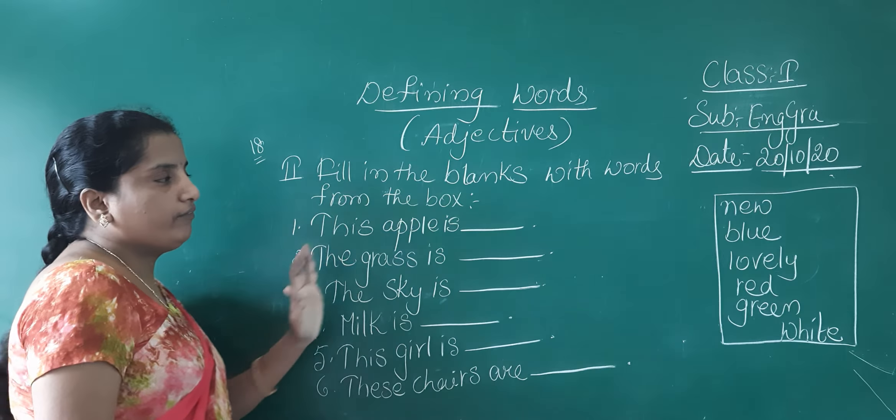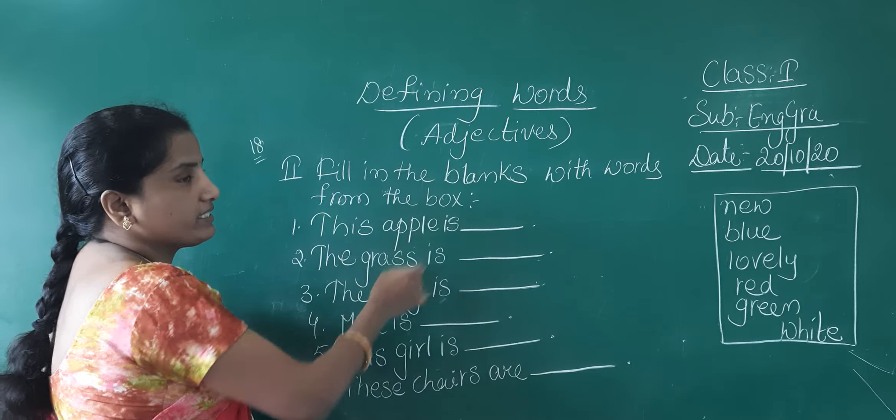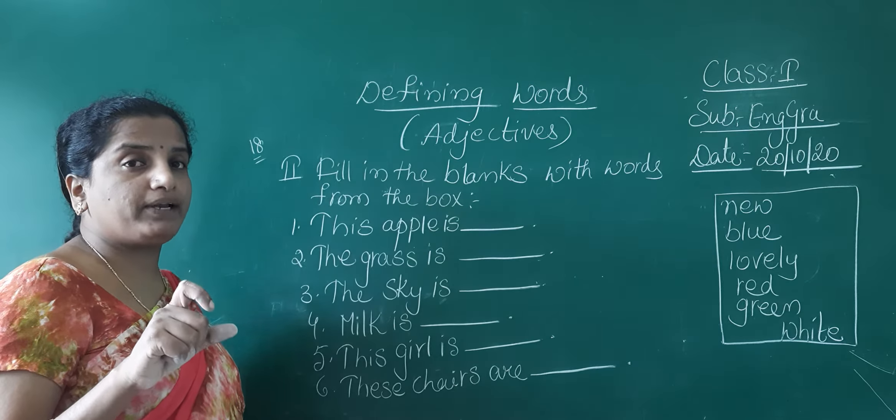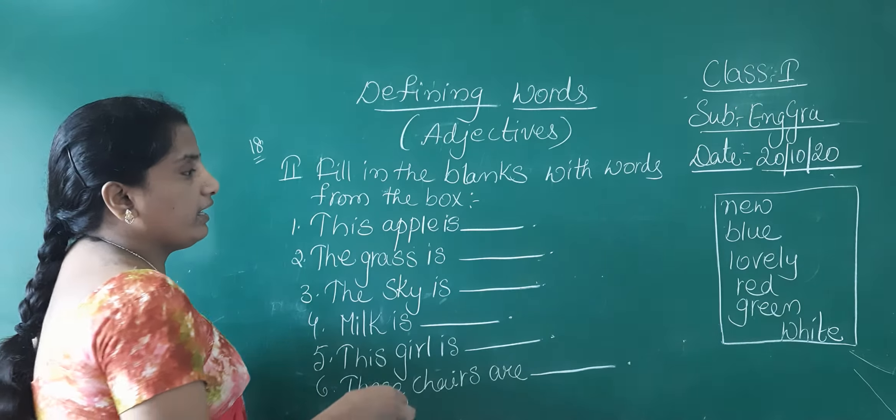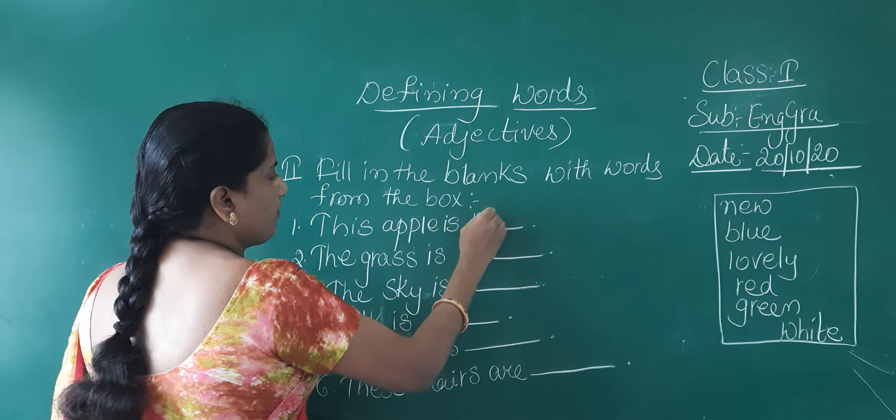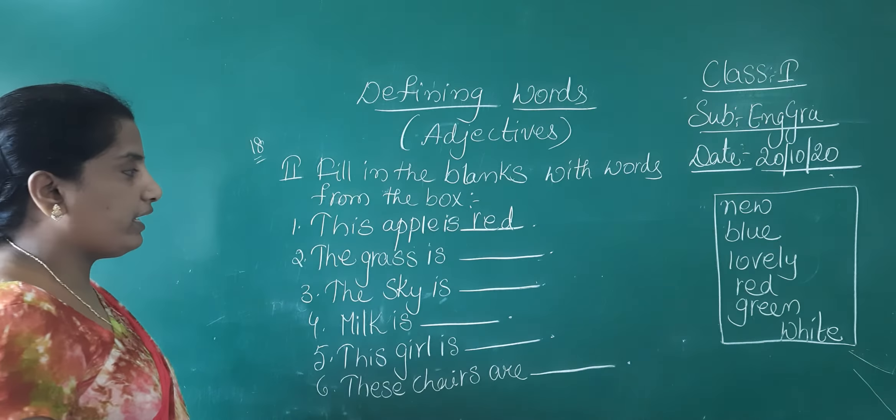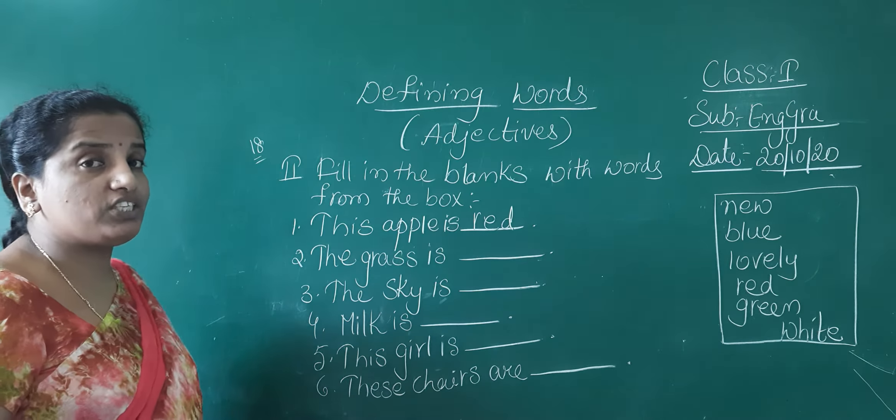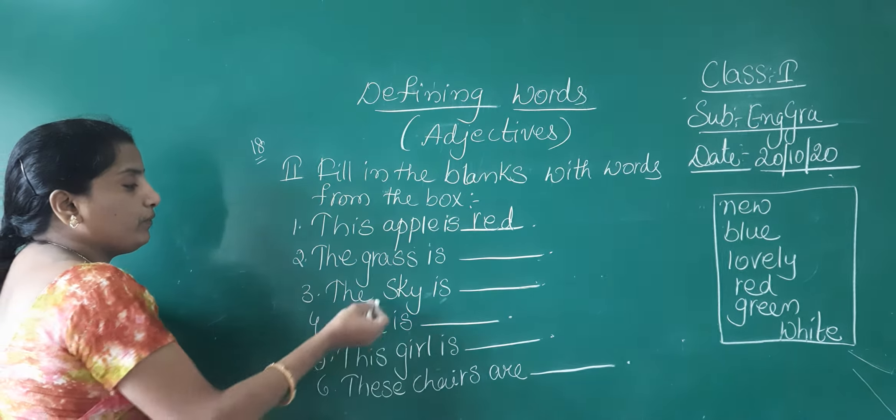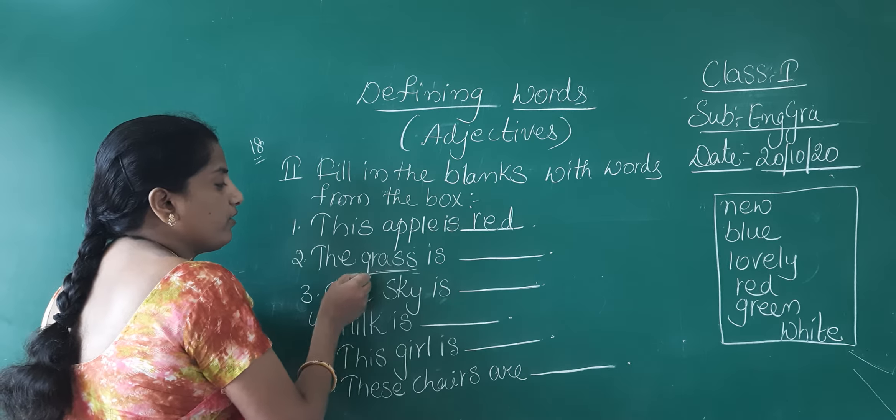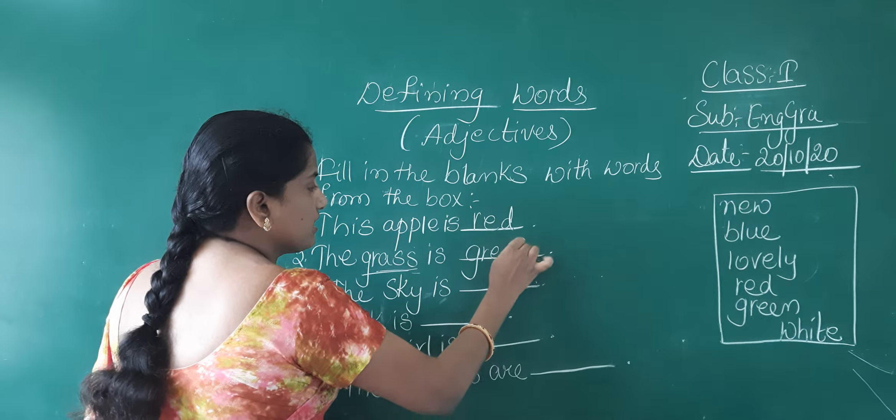These are the sentences given to you. Here we have to fill the word given to you in the box, suitable word from the box. Let us discuss children. This apple is, in which color are they children? The apple is in red color. The grass is, in which color the grass will be children? The grass is green.